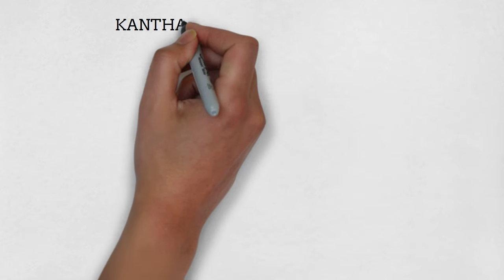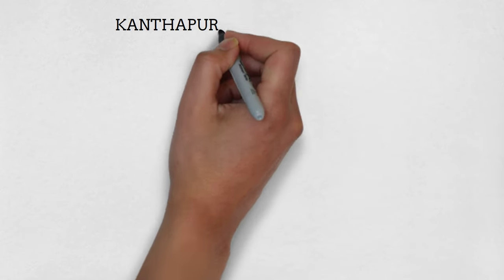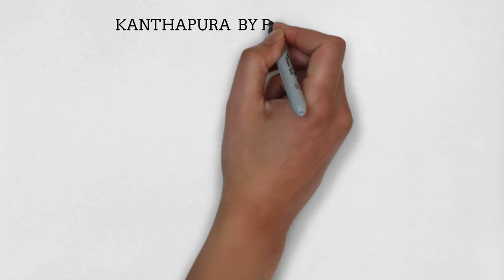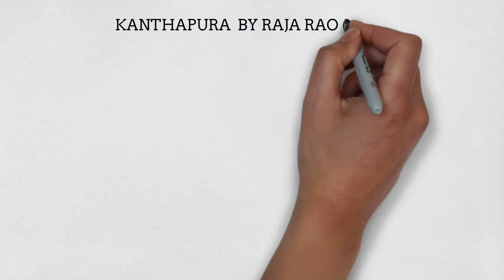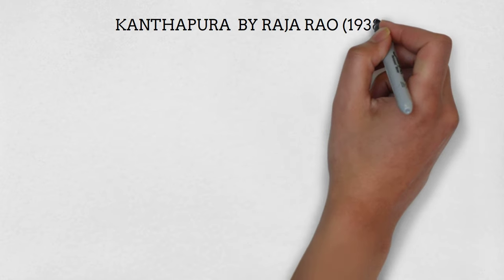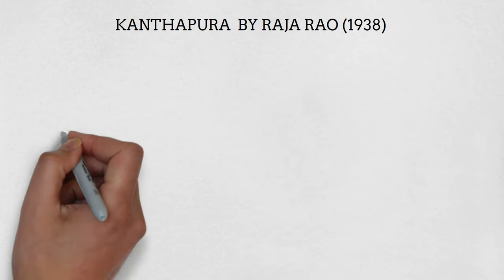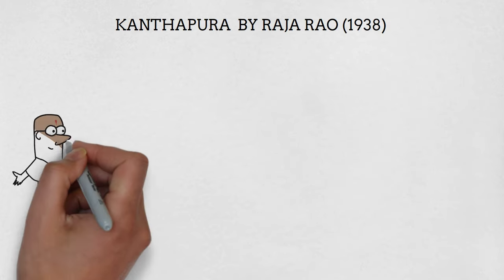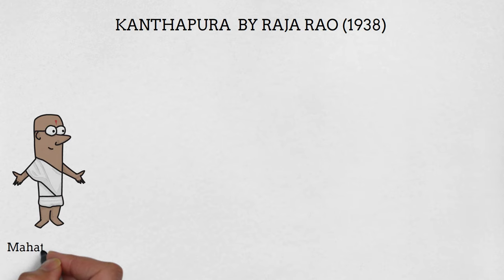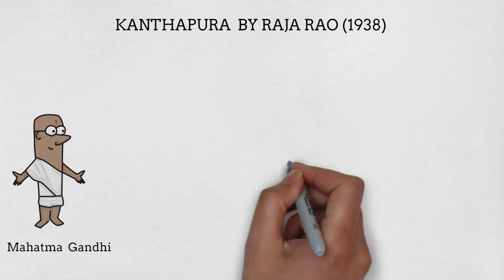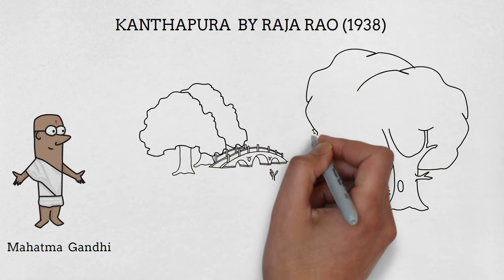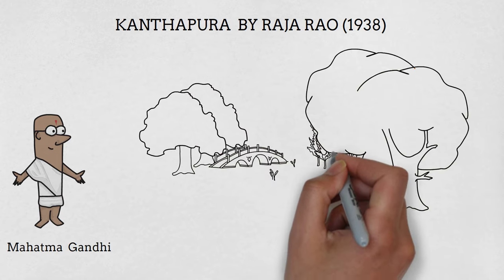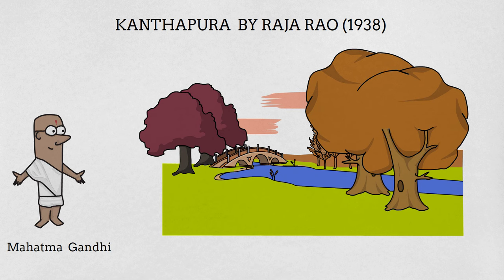Good morning friends. In this video we are going to discuss Kanthapura, one of the finest novels written by Raja Rao in 1938. It is also known as a Gandhian novel because it shows the impact of Mahatma Gandhi's teaching on a small South Indian village named Kanthapura.